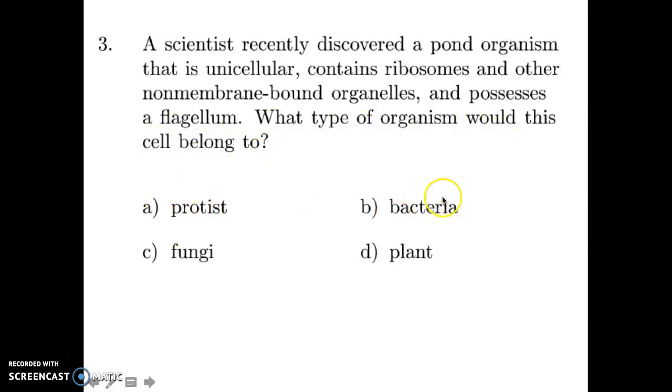Last one is a scientist recently discovered a pond organism that is unicellular, contains ribosomes and other non-membrane-bound organelles, and possesses a flagellum. So, what type of organism would this cell belong to? So, is it a protist, a bacteria, a plant, or a fungi? Remember that only one of these is going to have exactly those characteristics that were mentioned. So, answer that question during the video. Make sure that you also answer that on your paper.